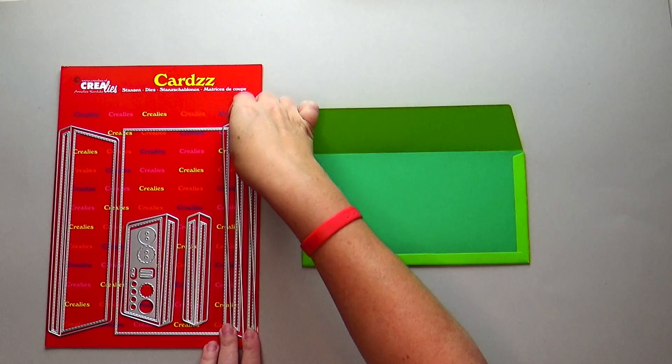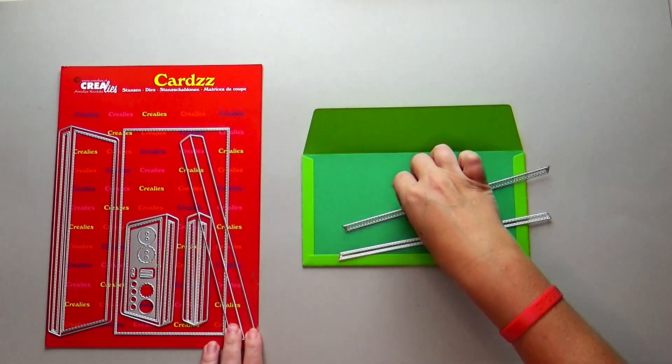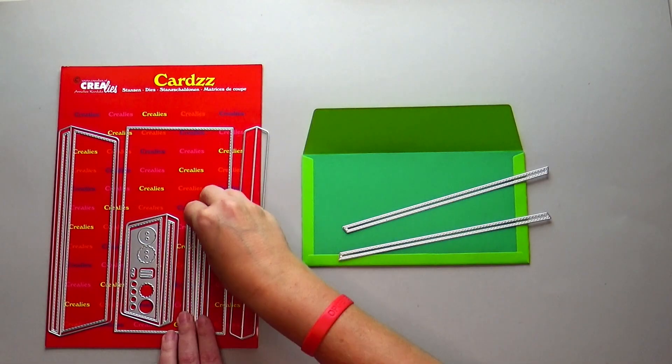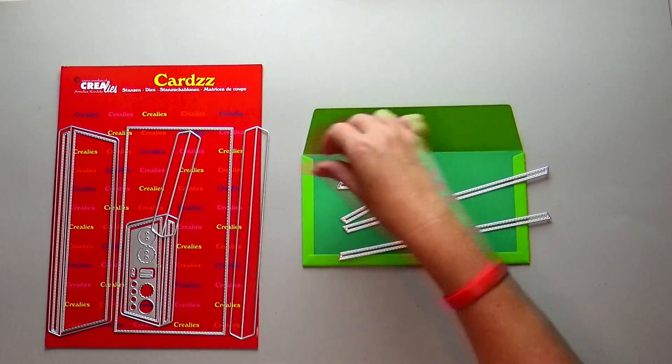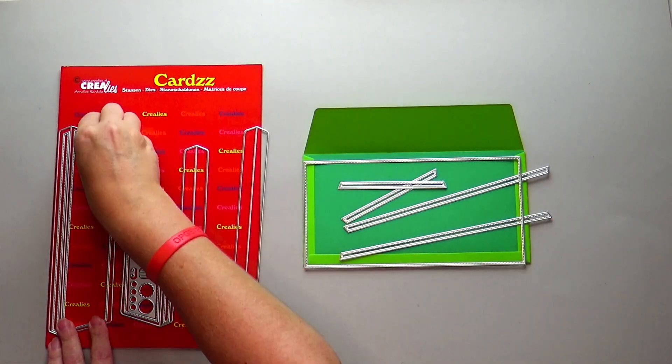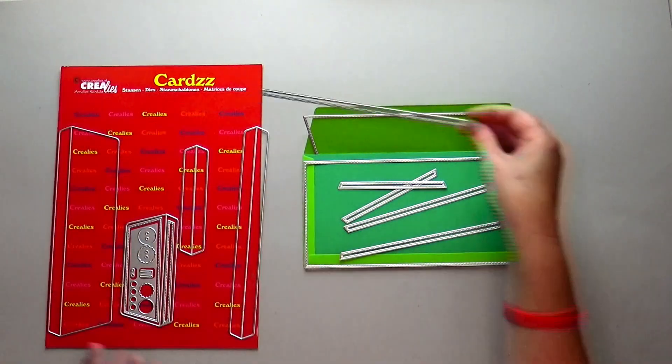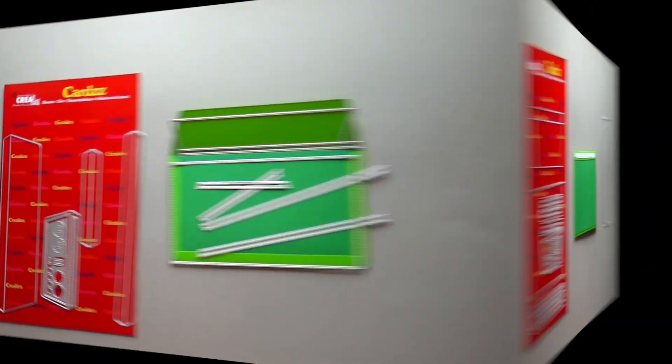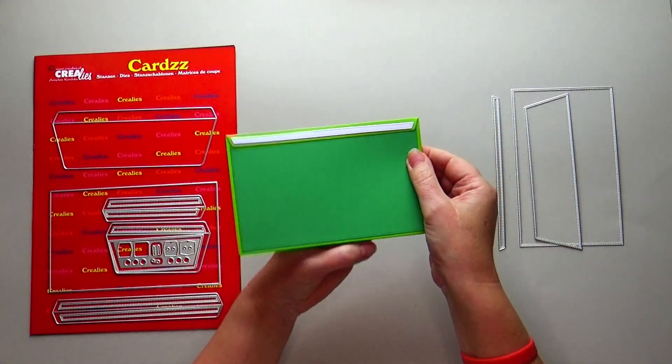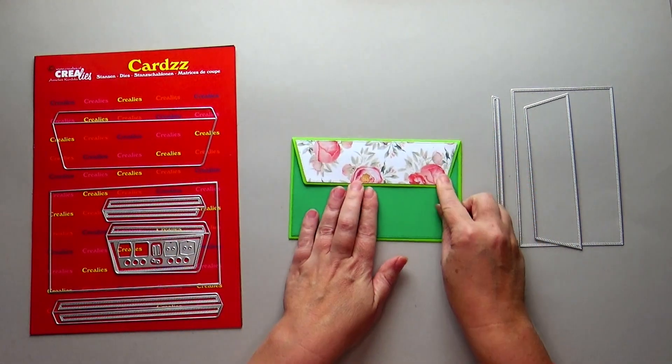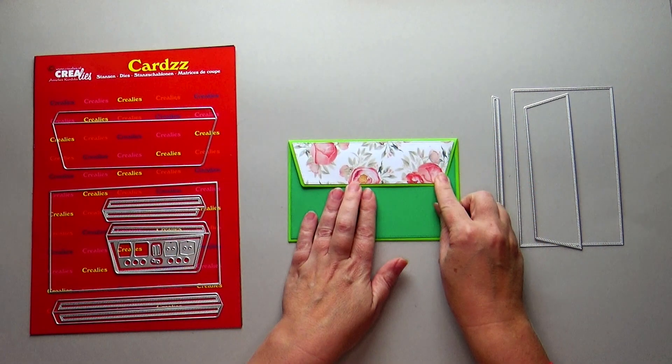All die cuts have a layer to give the envelope extra decoration. You can die cut these layers out of colored cardstock or use design paper for a different look.